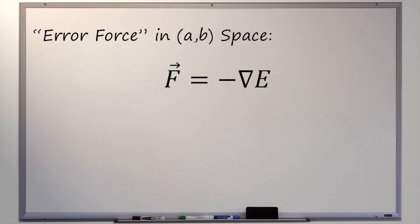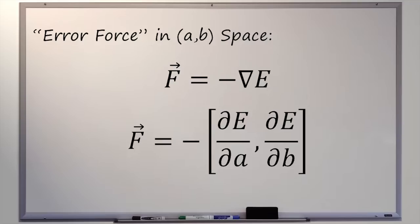Let's return to the idea of borrowing from nature, where force is often proportional to the negative gradient of potential. We'll call our error force the negative gradient of our error landscape — this should push the blue dot towards the optimum value, giving us the line of best fit. The negative gradient in a function of two variables is the negative vector whose first component is the partial derivative of the scalar field with respect to the first variable, and whose second component is the partial derivative with respect to the second variable.